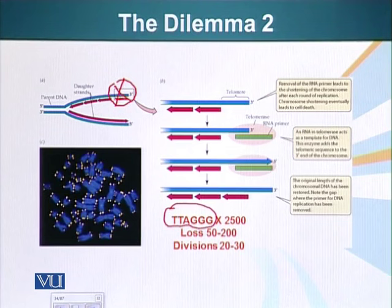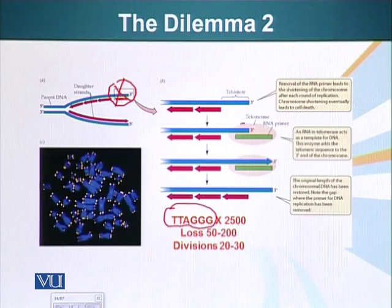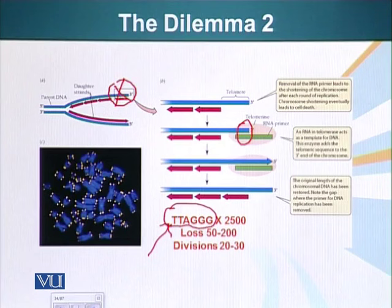Telomerase is a complex molecule — a complex of RNA. It has an RNA molecule in it and a protein which has the DNA polymerase function. As you can see, this RNA will hybridize with the overlapping section of DNA since it carries the complementary sequence. The telomerase uses the three-prime hydroxyl, which will be extended, and we will have a longer DNA.